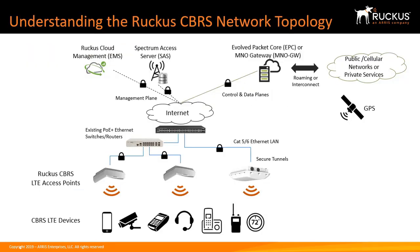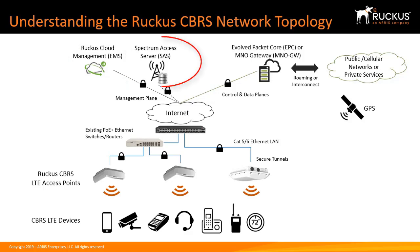This slide shows an overview of the Ruckus CBRS network architecture. At the cloud level is the Ruckus cloud LTE AP management portal, where LTE venues, networks, and LTE APs are configured and managed. A spectrum access server, or SAS, is needed to manage and assign CBRS frequencies as needed across three tiers of access.